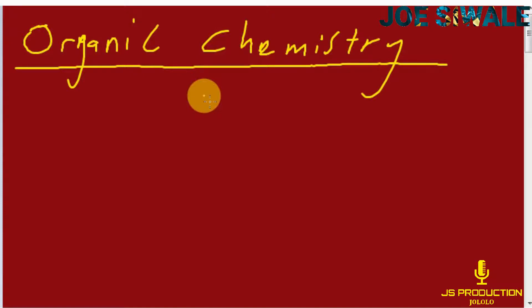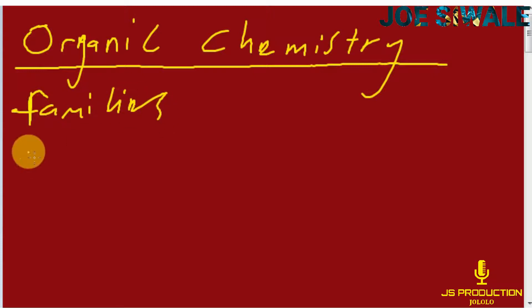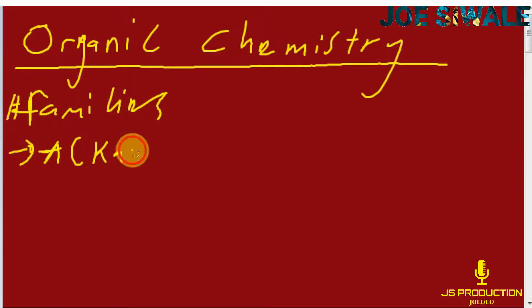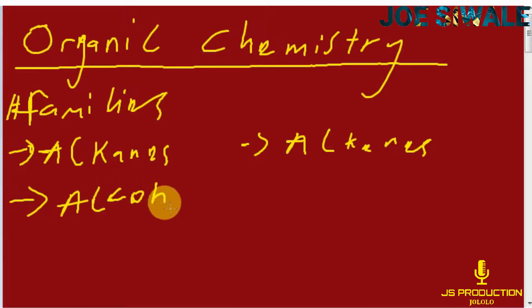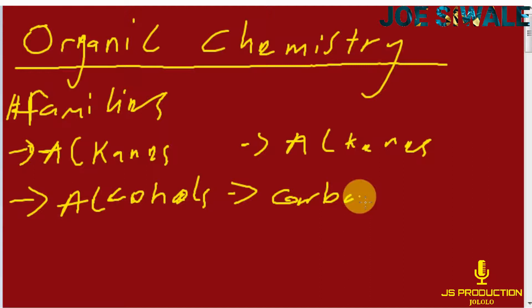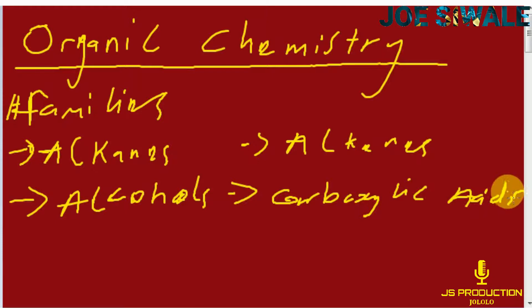Under organic chemistry, we are going to look at different families. Some of the families that we are going to study are the alkanes, the alkenes, the alcohols, and the carboxylic acids.